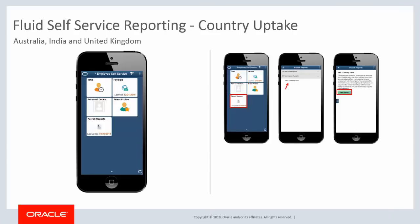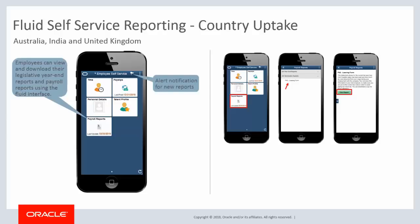The Fluid Self-Service Reporting feature enables employees to directly view and download reports and is now available for Australia, India, and the United Kingdom. The Fluid User Interface enables employees to view and download their legislative year-end reports and payroll reports using a desktop, laptop, or smartphone. Employees are notified by alerts when new reports are available, and they can also see the date when the report was made available and when it was last viewed. This completes our discussion of the Fluid Self-Service Reporting feature.